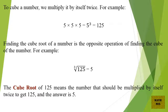Finding the cube root of a number is the opposite operation of finding the cube of the number. For example, the cube root of 125 equals 5. The cube root of 125 means the number that should be multiplied by itself twice to get 125, and the answer is 5.